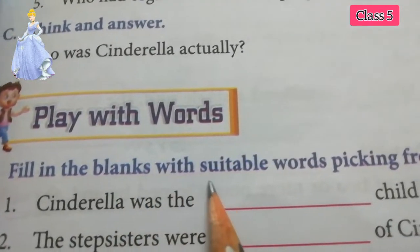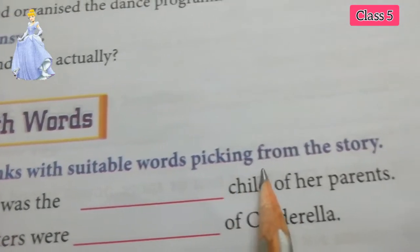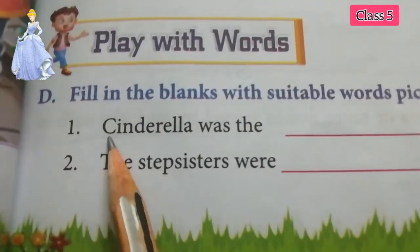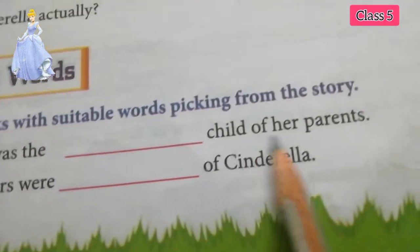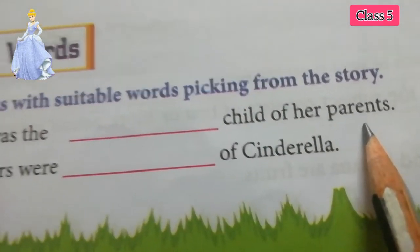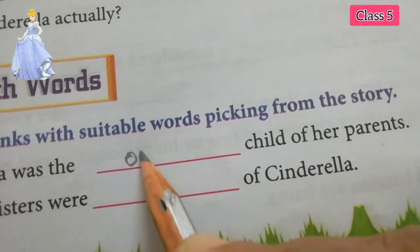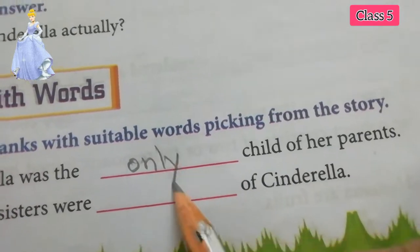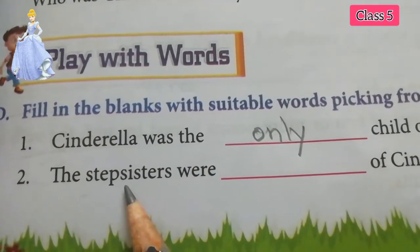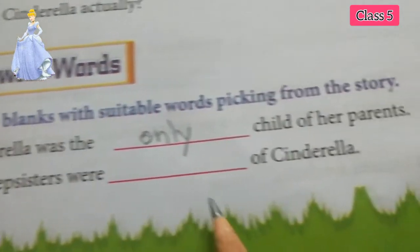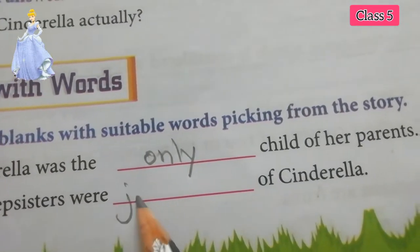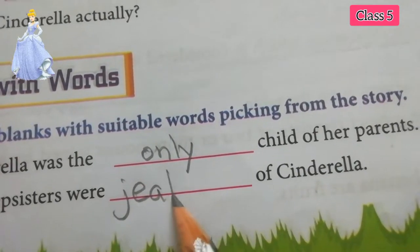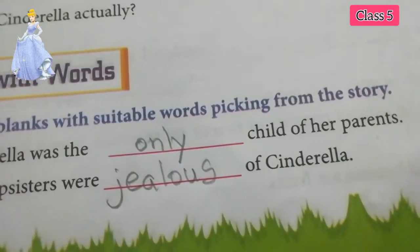Fill in the blanks with suitable words picked from the story. Number one: Cinderella was the blank child of her parents — the answer is 'only', O-N-L-Y. The stepsisters were blank of Cinderella — the answer is 'jealous', J-E-A-L-O-U-S.